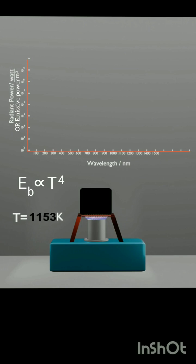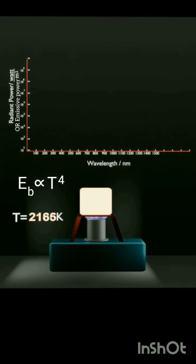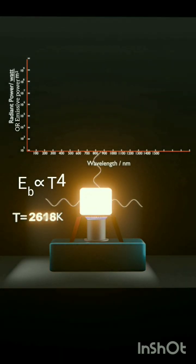This law says that as the temperature of the graphite increases, the amount of heat energy it releases from unit area in unit time also increases. And it increases really fast to the power of four.